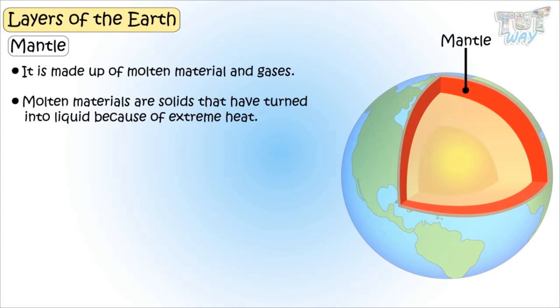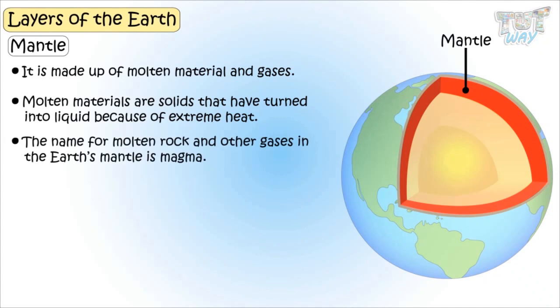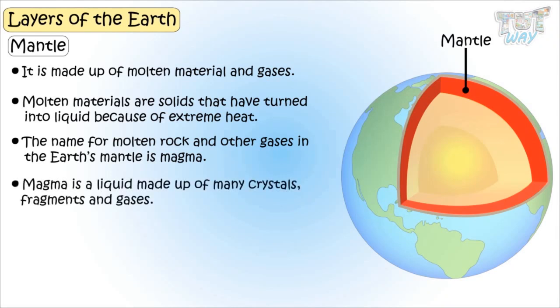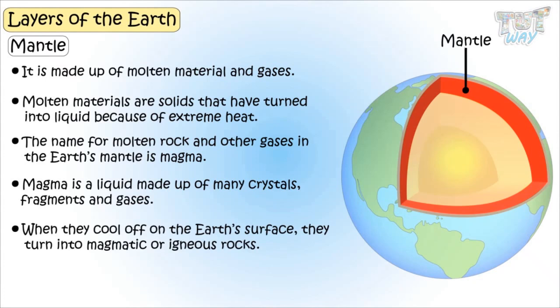The name for molten rock and other gases in the earth's mantle is magma. Magma is a liquid made up of many crystals, fragments, and gases. When they cool off on the earth's surface, they turn into magmatic or igneous rocks.